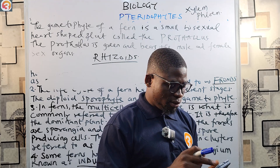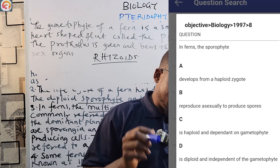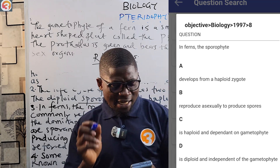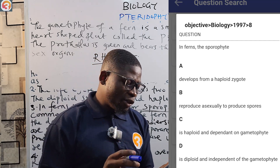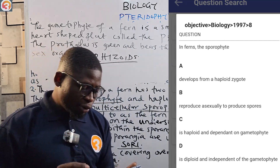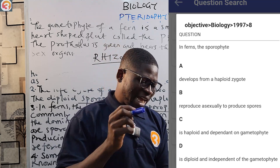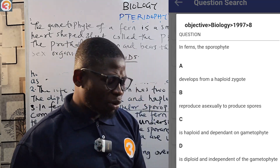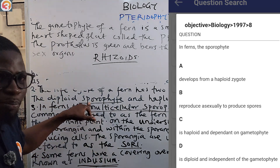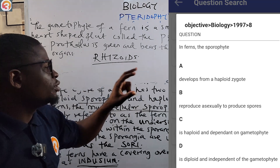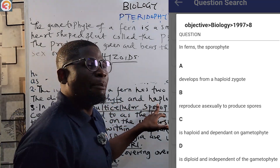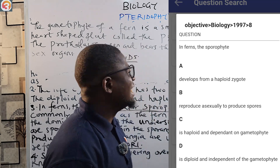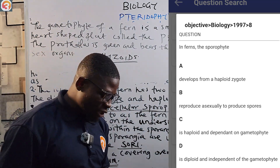The 1997 JAMB question, number 8: 'In ferns, the sporophyte...' Options: A - Develops from a haploid zygote; B - Reproduces asexually to produce spores; C - Is haploid and dependent on the gametophyte; D - Is diploid and independent of the gametophyte. The sporophyte is diploid - we know there's a diploid sporophyte and a haploid gametophyte. The answer is D: it is diploid and independent of the gametophyte.